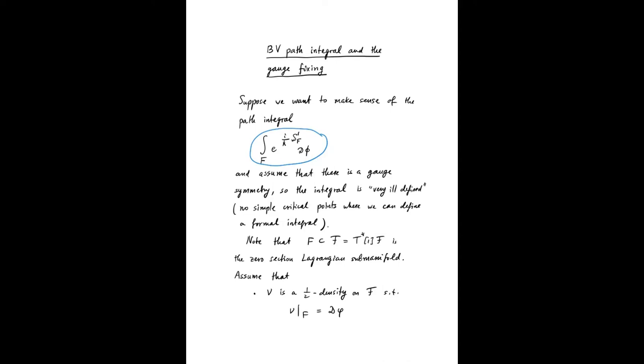Now, if you know about the BV extensions, then you can see immediately that F is a Lagrangian submanifold in our BV manifold—it's just the zero-section Lagrangian submanifold. Let's assume that ν is a half-density on F such that if you restrict it to our Lagrangian submanifold of BRST fields, then we will have this density μ with respect to which we defined the original integral.